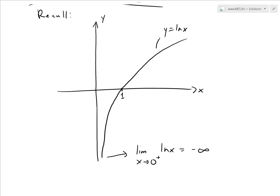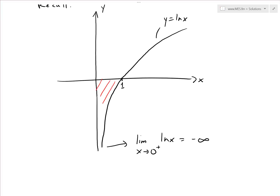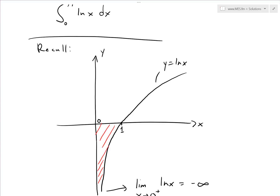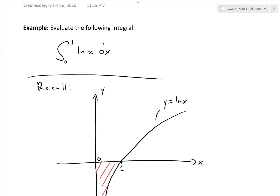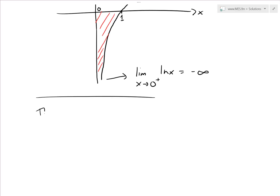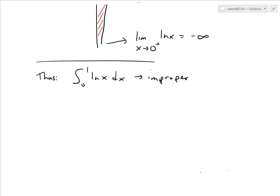The function we're integrating, ln(x), when integrated over this region, gives us the area from 0 to 1. We're trying to find out if that area exists or goes to infinity. Since this limit goes to infinity, there is a vertical asymptote at x = 0, making the integral from 0 to 1 of ln(x) dx improper — specifically a type 2 improper integral, which means it has a vertical asymptote.